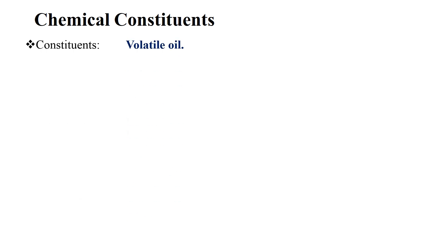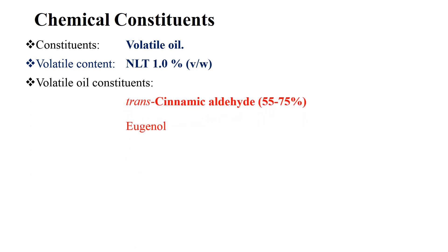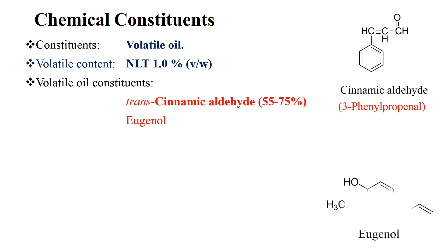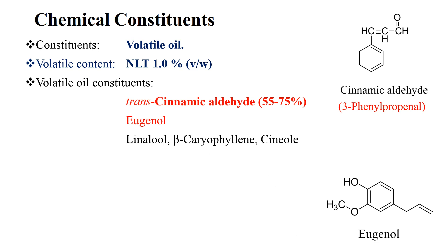Chemical constituents. Cinnamon is an aromatic herb. The aroma is due to the presence of volatile oil. The standard drug has volatile oil content not less than 1 percent. The major constituents of volatile oil are cinnamic aldehyde and eugenol. Cinnamic aldehyde is 3-phenylpropenyl. The sweet taste of cinnamon is due to cinnamic aldehyde. The volatile oil also has constituents like linalool, beta-caryophyllene, and cinnamic aldehyde.